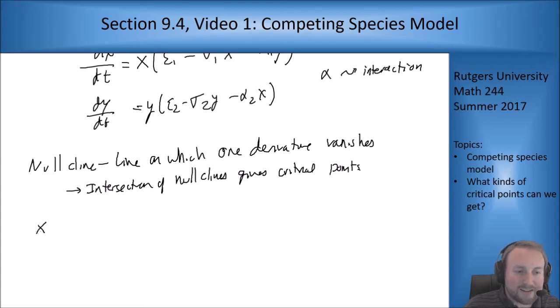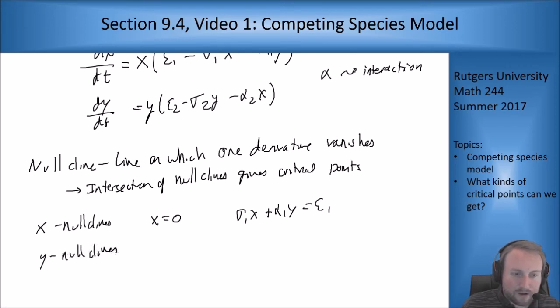For our x nullclines, this is where our x derivative is zero. We get x equals zero which is not too interesting, and the other one which is sigma_1 x plus alpha_1 y equals epsilon_1. For our y nullclines we get y equals zero and sigma_2 y plus alpha_2 x equals epsilon_2. These guys are both lines which means we can draw them on a graph and see what happens.